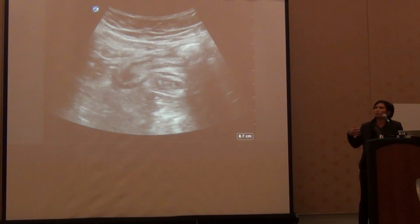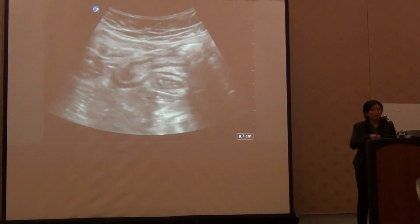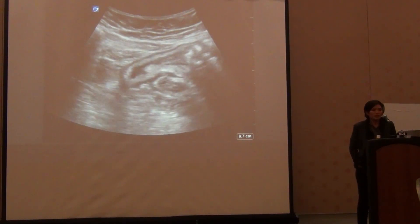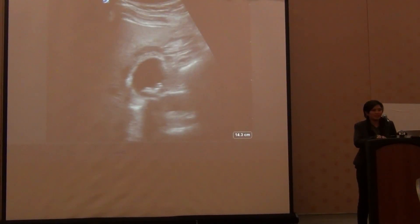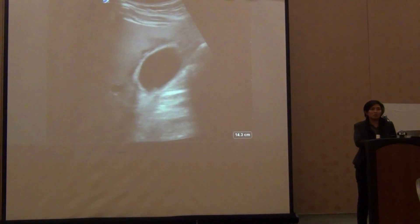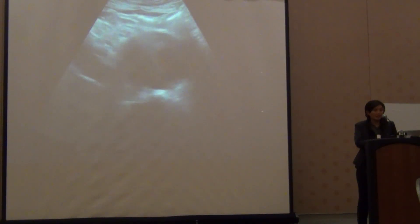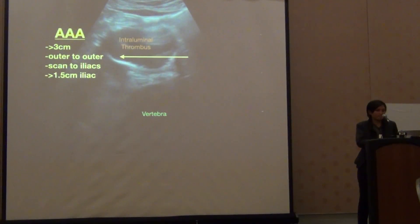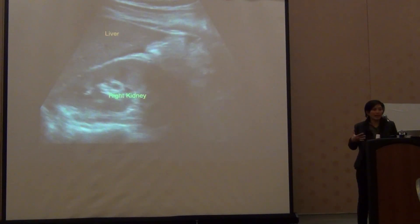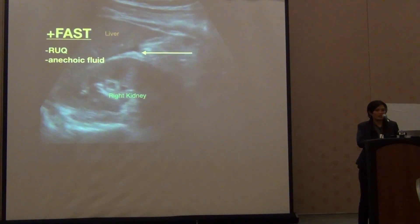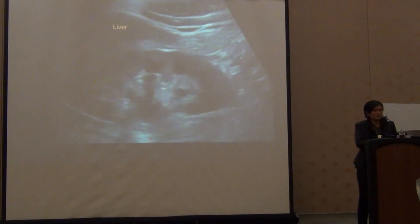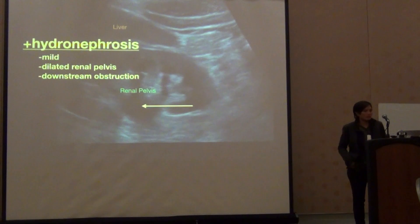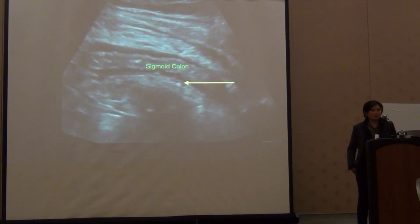Fast forward many years later, I think about what could have been done for Francisco. These are just different ultrasound images of various diagnoses that could have been made within a few minutes in the hands of a trained provider. This is an example of an appendicitis. This is an example of gallstones and signs of acute cholecystitis. This is a triple-A with thrombus. This is an example of some free fluid in the abdomen that may be a sign of ruptured viscus, ascites from malignancy, or something else.